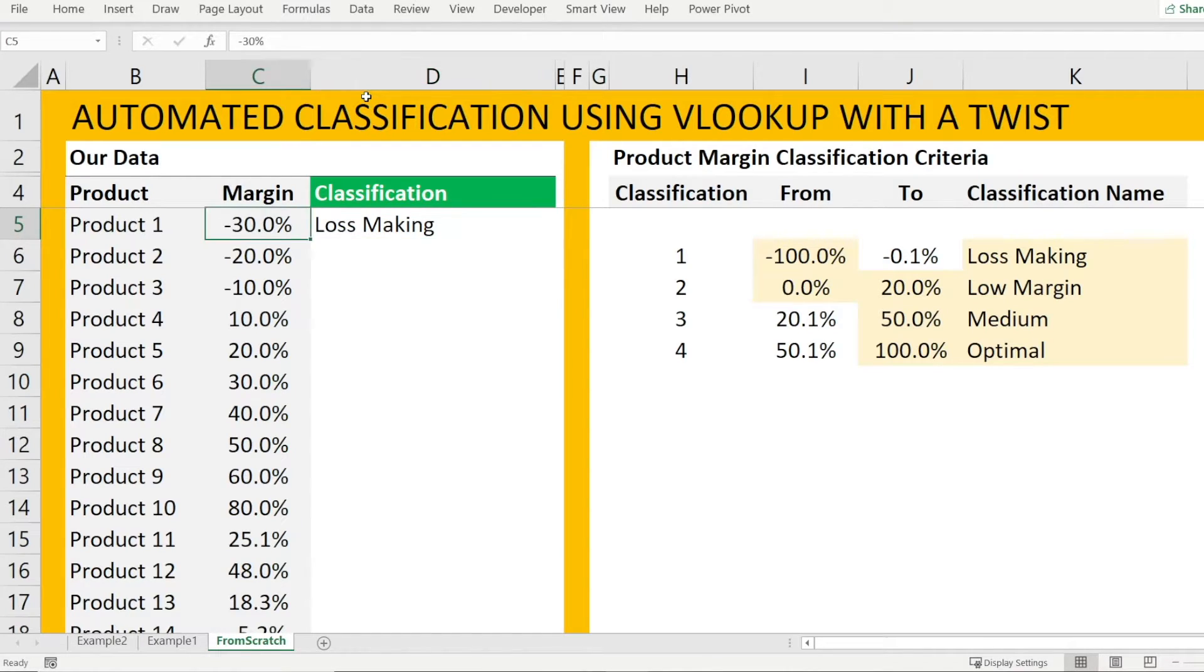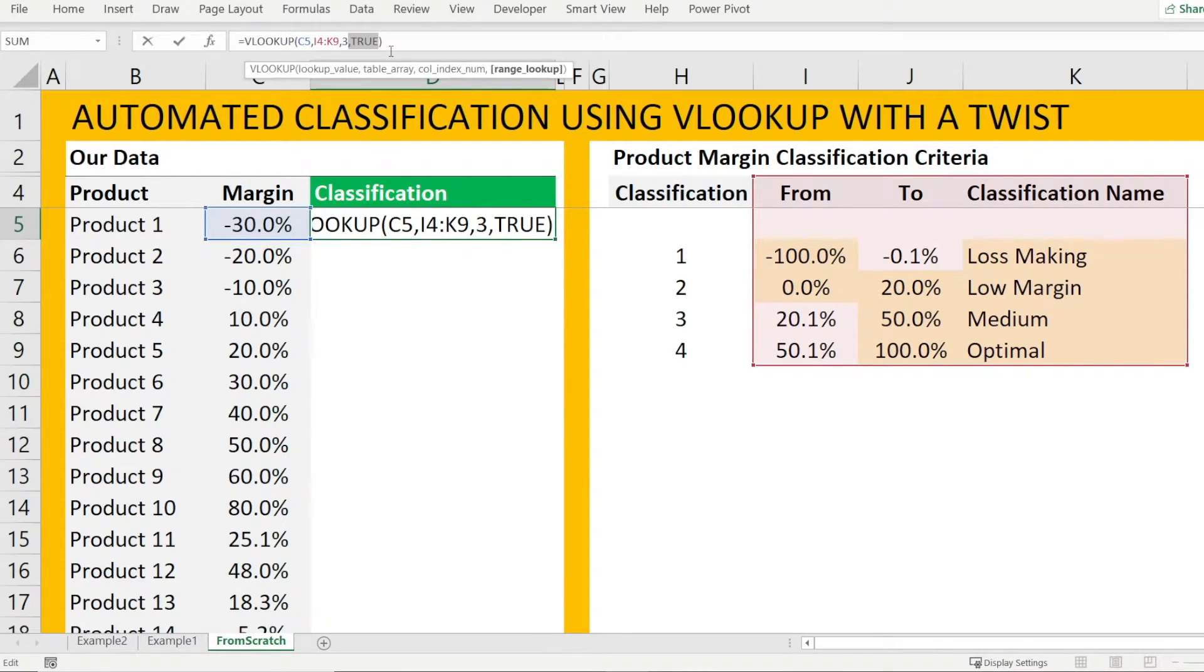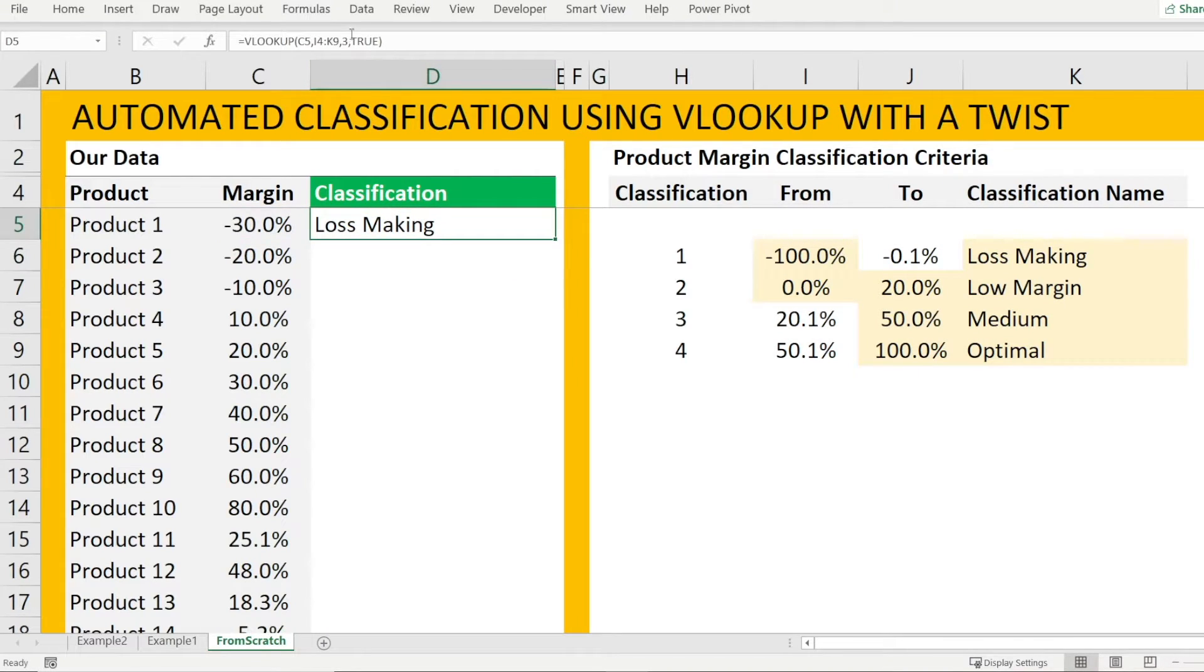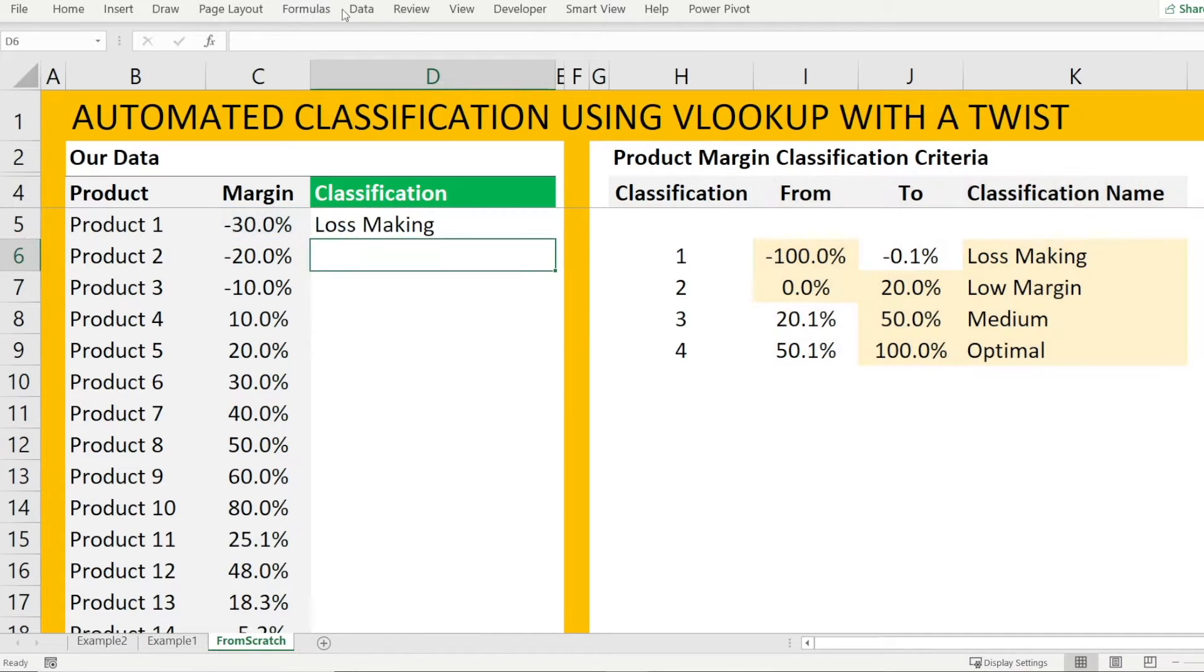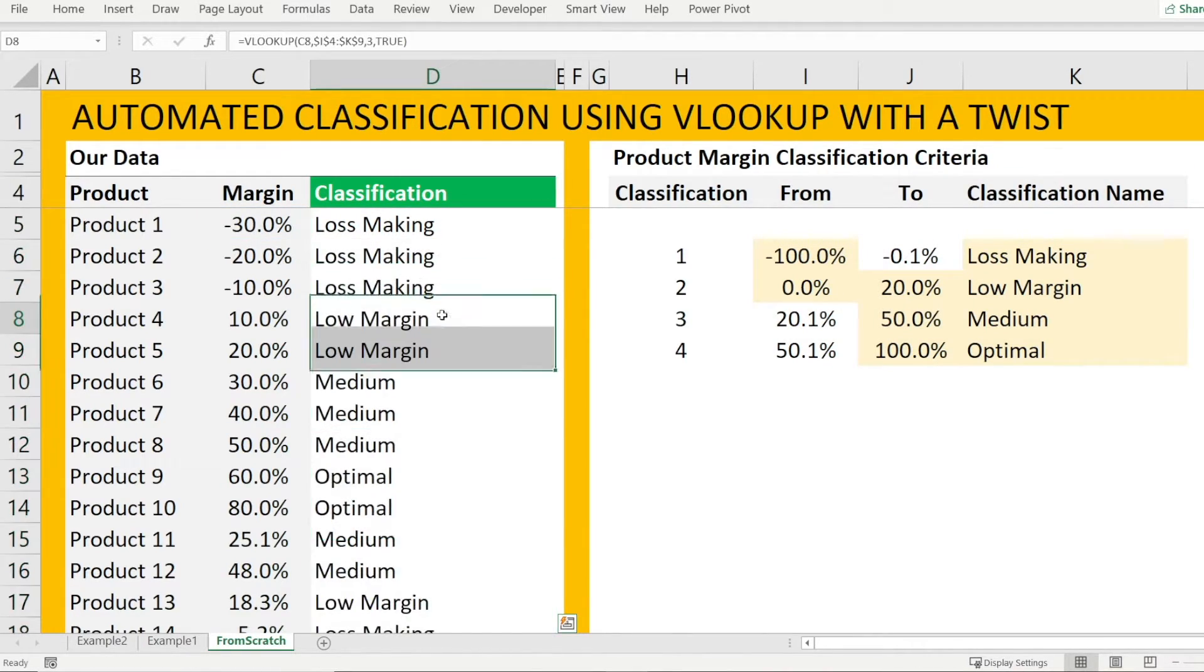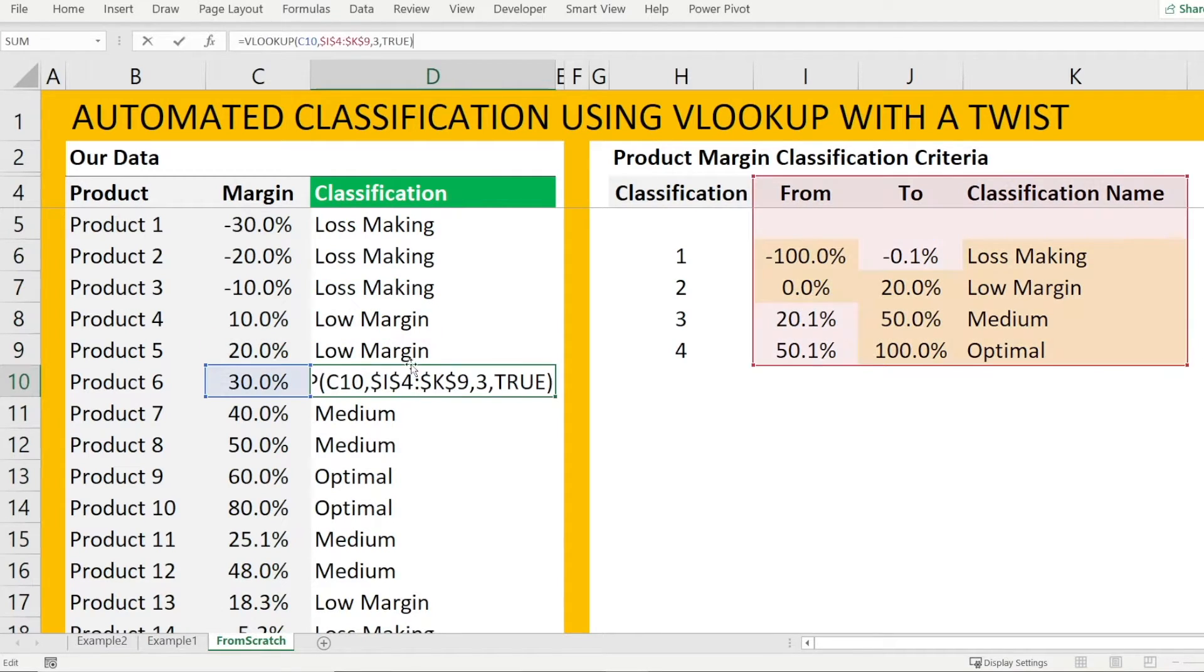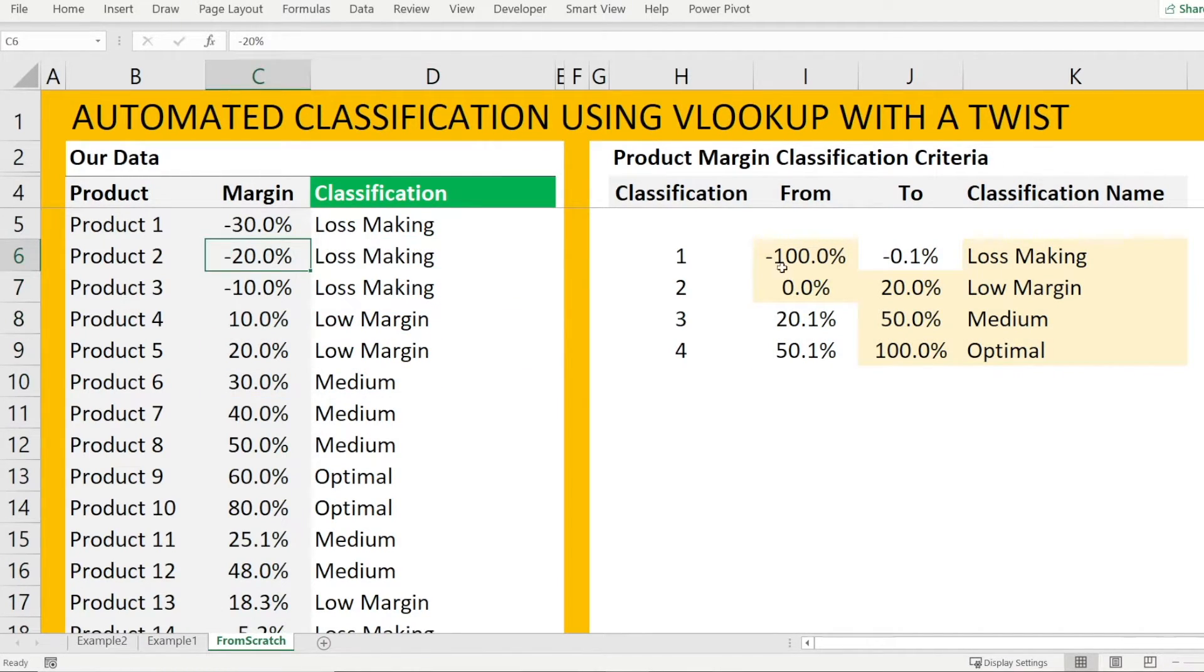We can use VLOOKUP to find not something exact, but something which is close, something which is an approximate match by typing the word true at the end of the VLOOKUP formula. And don't forget to put the dollar sign so that when you drag this formula down, or when you double click it, it's still referencing the same table. And notice how 20% is actually not in here, but the VLOOKUP is smart enough to find an approximate match because we type true at the end.